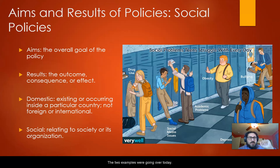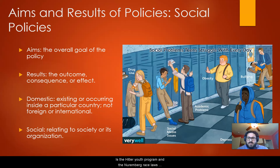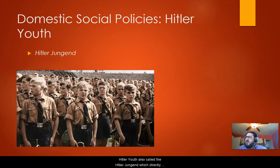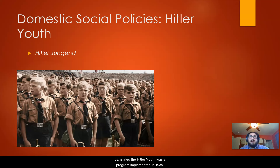The two examples we're going over today are the Hitler Youth Program and the Nuremberg Race Laws. The first example is the Hitler Youth — also called the Hitler Jungen, which directly translates to Hitler Youth — a program implemented in 1935.